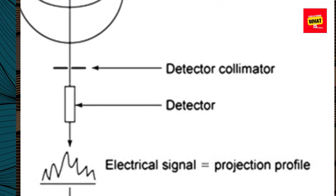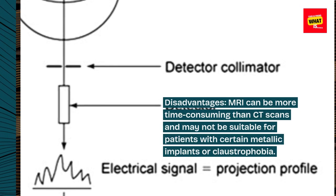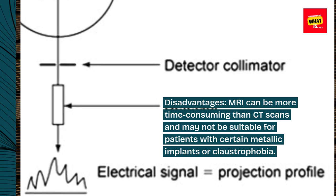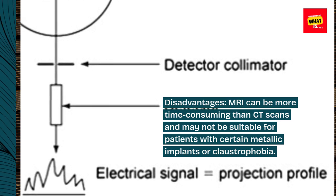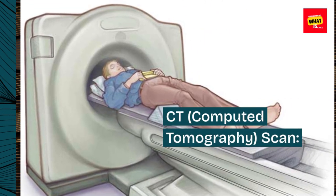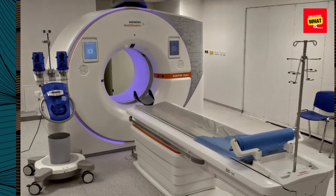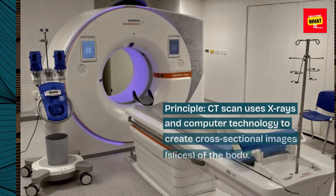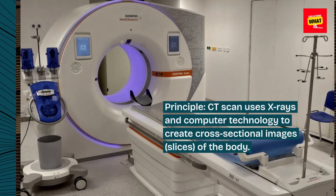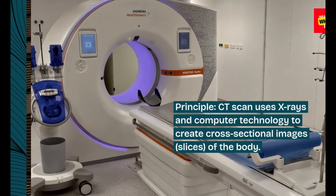Disadvantages: MRI can be more time-consuming than CT scans and may not be suitable for patients with certain metallic implants or claustrophobia. CT — Computed Tomography Scan. Principle: CT scan uses x-rays and computer technology to create cross-sectional images, or slices, of the body.